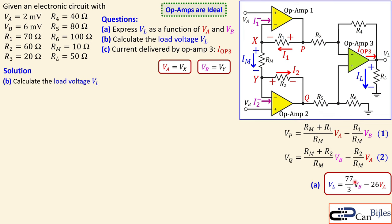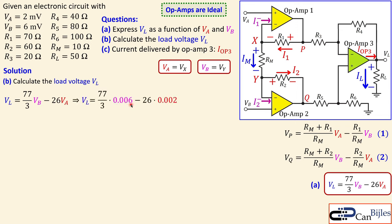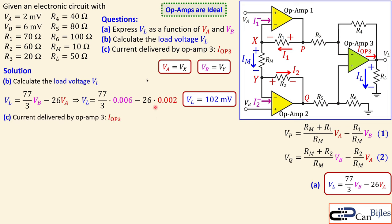For question B, we simply substitute the given values: Vb equals 6 millivolts and Va equals 2 millivolts into the expression from question A. Doing the math correctly, we get VL equals 122 millivolts. That is the load voltage for this situation.